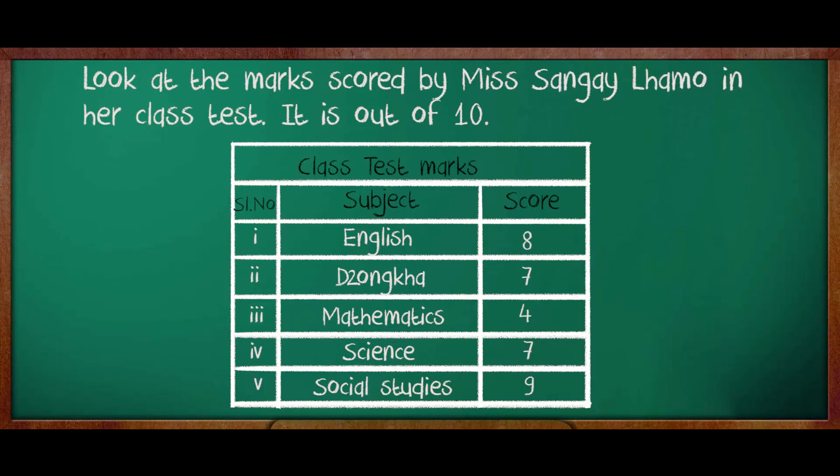Now, let us look at the marks scored by Ms. Sanghel Lamo in her class test. It is out of 10. In English, she scored 8 out of 10; Zongka, 7 out of 10; Mathematics, 4 out of 10; Science, 7 out of 10; and Social Studies, 9 out of 10. We shall use this set of data and have a simple quiz to check the understanding of what we have just learned.